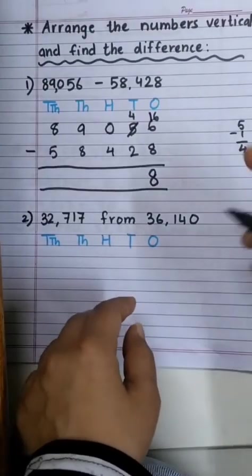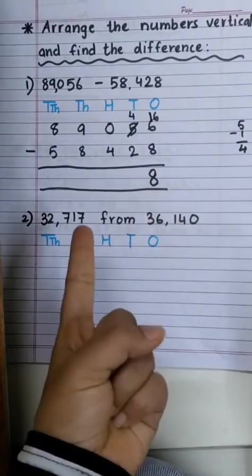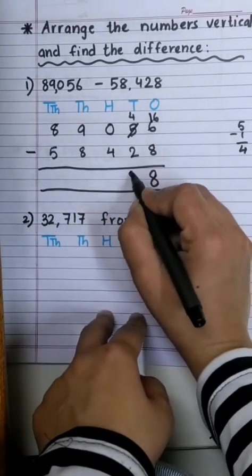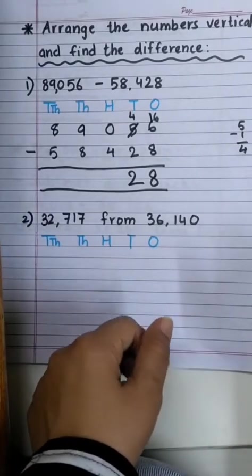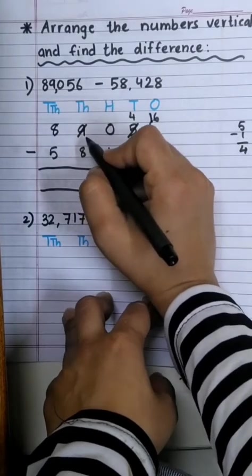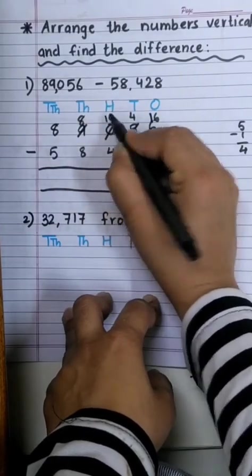Now, 4 minus 2. So, let's start counting after 2: 3, 4. How many? 2. Now, 0 minus 4. Again, not possible. So, 0 will go and seek the help from 9. 9 minus 1, 8. And this becomes 10.